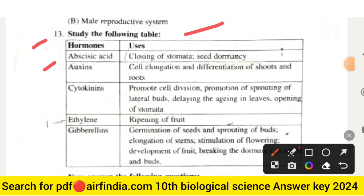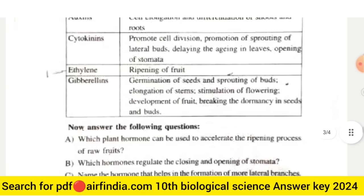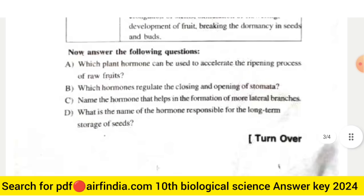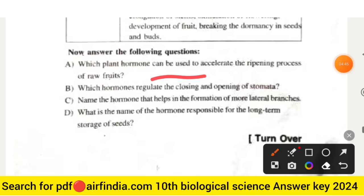The table continues: auxins — cell elongation and differentiation of shoots and roots; cytokinin — promote cell division, promotion of sprouting of lateral buds, delaying aging in leaves, opening of stomata; ethylene — ripening of fruit; gibberellin — germination of seeds, sprouting of buds, elongation of stems, stimulation of flowering, development of fruit, breaking dormancy in seeds and buds.